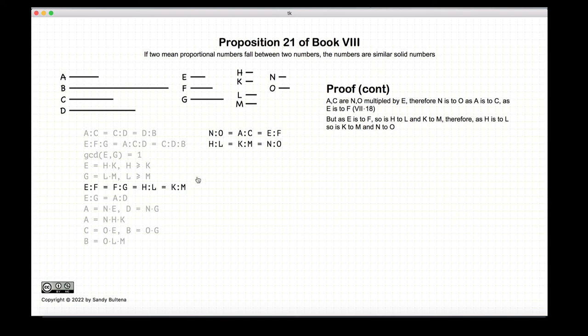But e to f is equal to h to l is equal to k to m. So we have that h to l and k to m, which is equal to e to f, is also equal to the ratio of n to o. And therefore, a is similar to b, because the ratios of h to l, k to m, and n to o are all equal.